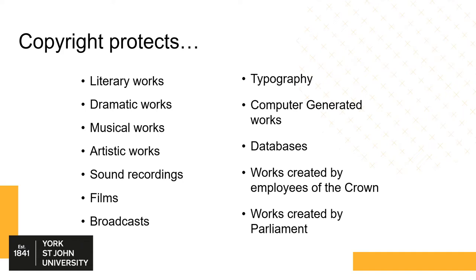Different types of works have different periods of copyright protection. For literary, dramatic, musical and artistic works, copyright lasts for 70 years from the end of the year in which the author or creator has died. This video is going to focus on audio-visual materials, but it's important to recognise that all works have copyright protection.